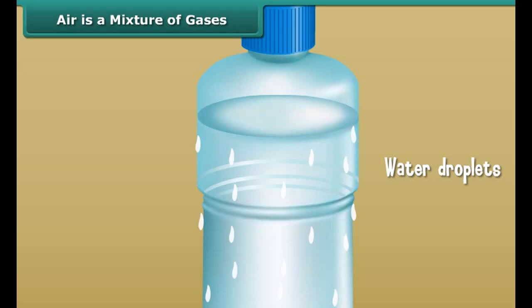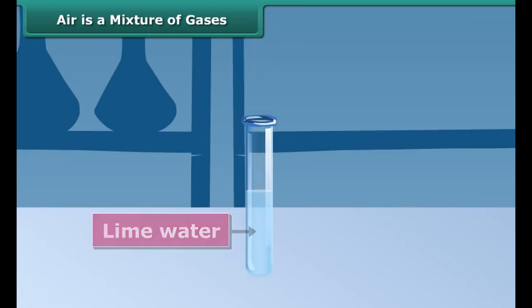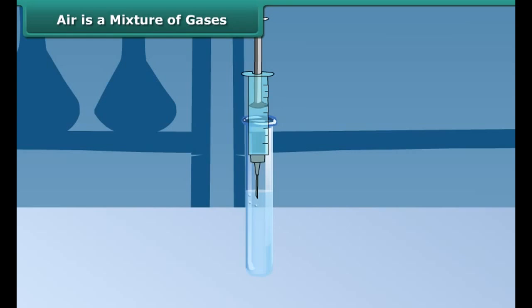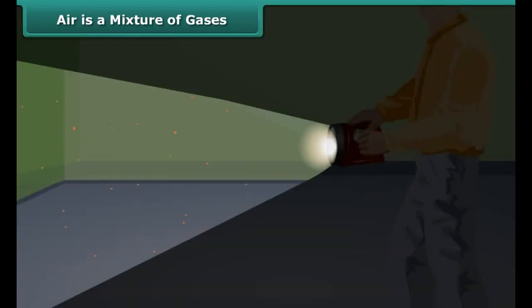When you take out a water bottle from the freezer, some water droplets appear on the outer surface of the bottle. Where do the water droplets come from? Is water leaking through the bottle? No, it's not the case. Water vapor present in the air turns back into liquid when it touches the cold outer surface of the bottle. This proves air contains water vapor.